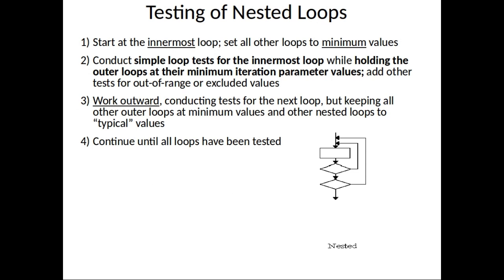For nested loops, extending the simple loop approach would cause the number of possible tests to grow geometrically as nesting increases. The recommended approach is: start at the innermost loop, set all other loops to minimum values, conduct simple loop tests for the innermost loop, then work outward — conducting tests for each next loop while keeping outer loops at minimum values and other nested loops at typical values — until all loops have been tested.